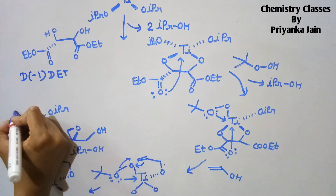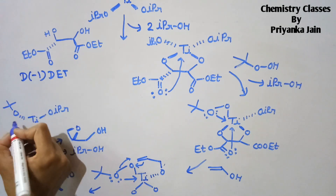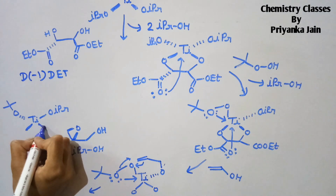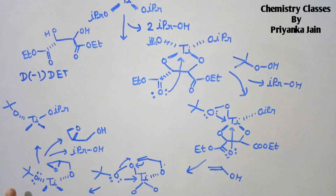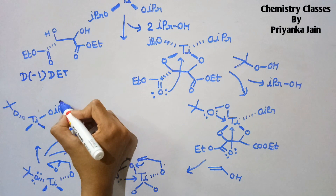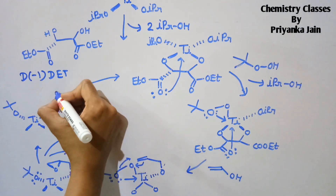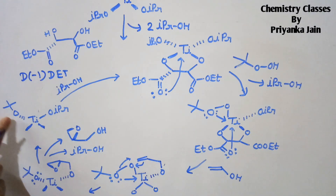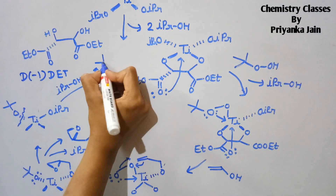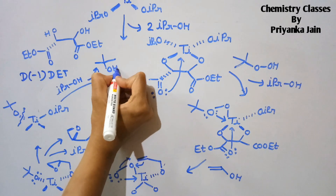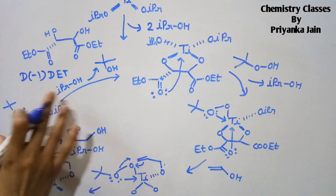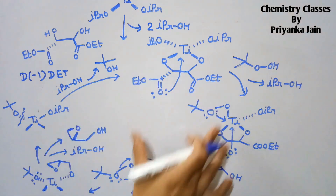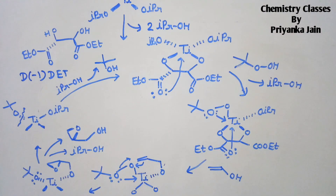We get the titanium complex with Ti–OiPr, the oxygen, and the tertiary butyl group — the rest of the compound remains. In the presence of isopropyl alcohol, it reacts at this position, causing dissociation of this bond. We get tertiary butyl alcohol as a byproduct, and the titanium complex is regenerated to undergo the catalytic cycle again and again.